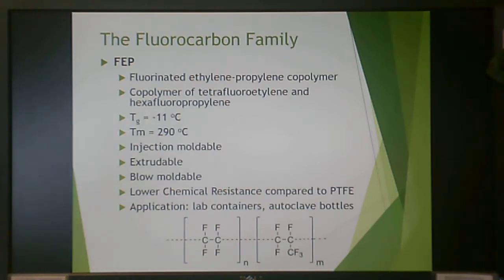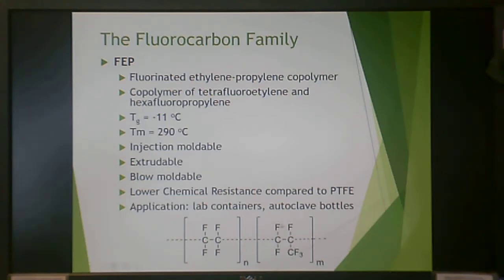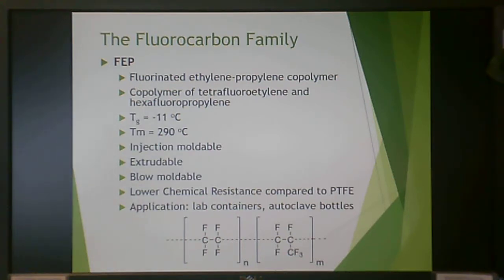Fluorinated ethylene propylene copolymer (FEP) is a copolymer of tetrafluoroethylene and hexafluoropropylene — not a tetrafluoroethylene homopolymer. All hydrogen positions are replaced with fluorine atoms. It has a TG of -11°C and a TM of 290°C. It is injection moldable, extrudable, and blow moldable, though it has lower chemical resistance than PTFE. It is typically used in lab containers and autoclave bottles.